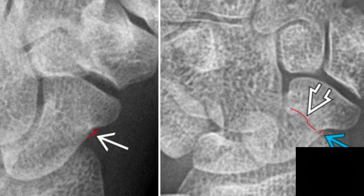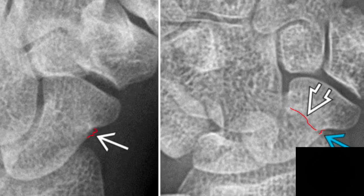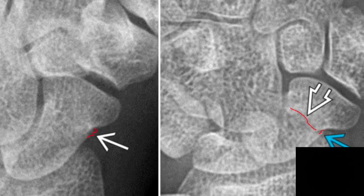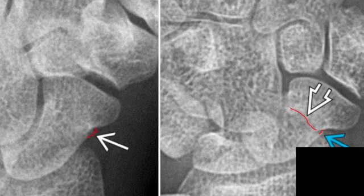Our next radiograph depicts another patient that has snuffbox tenderness with clinical concern for an acute scaphoid fracture. On radiographic imaging, we do see some mild cortical irregularity. This was read as indeterminate for possible scaphoid fracture and a follow-up radiograph was obtained. On a 10-day follow-up radiograph we see some lucency within the trabecula and a focal area of cortical disruption. Looking back at the initial radiograph, this was an essentially occult fracture, and on our follow-up radiograph obtained 10 days later, the fracture becomes more visible.